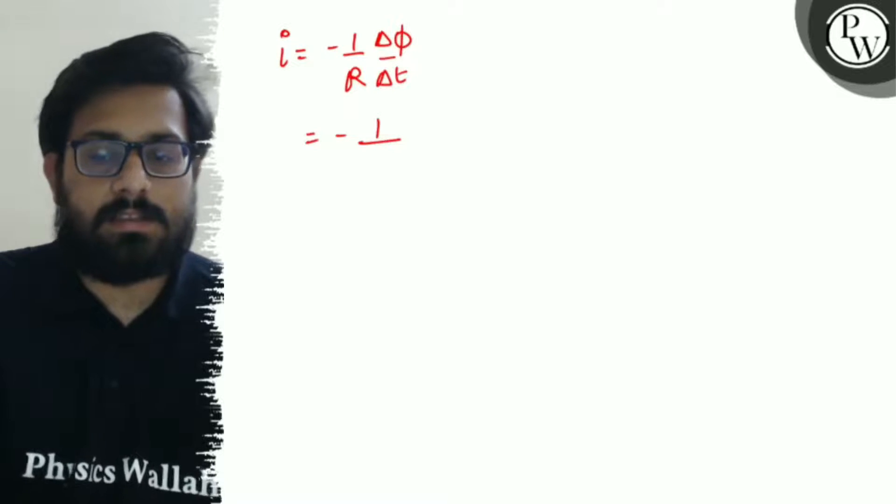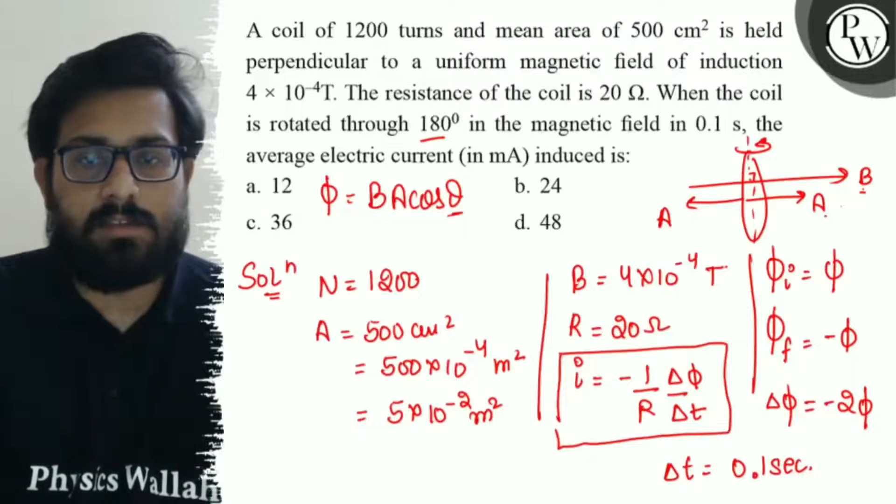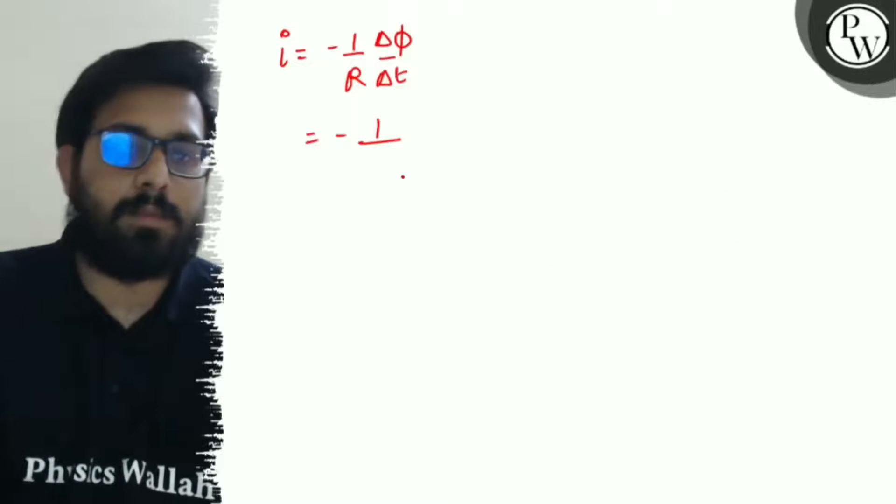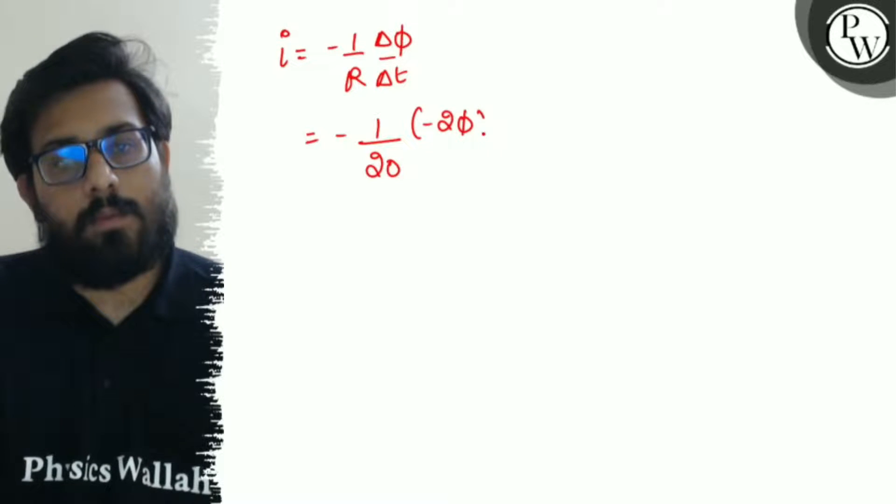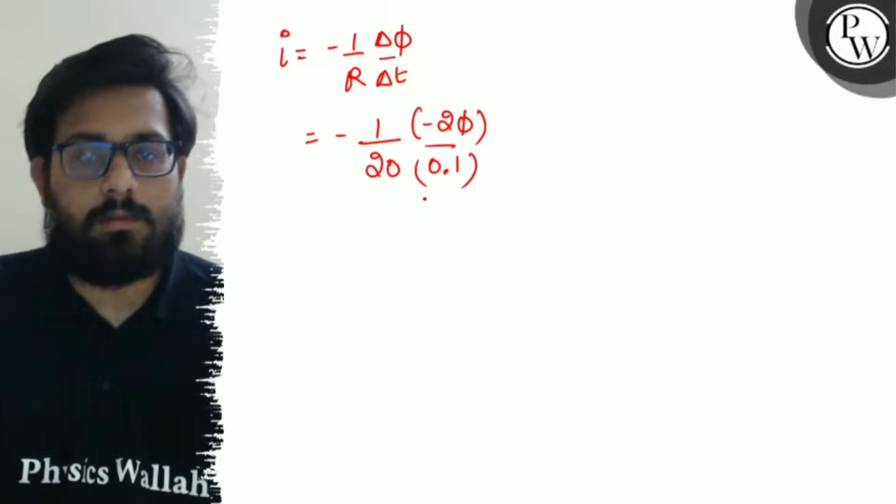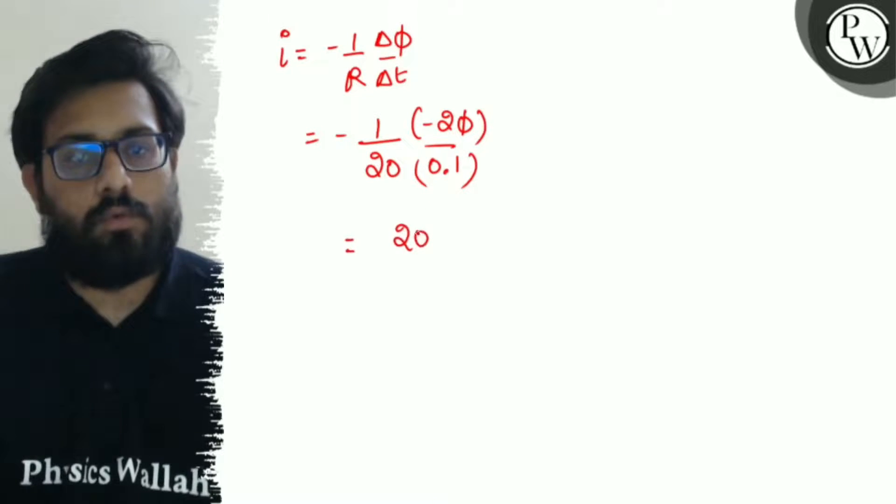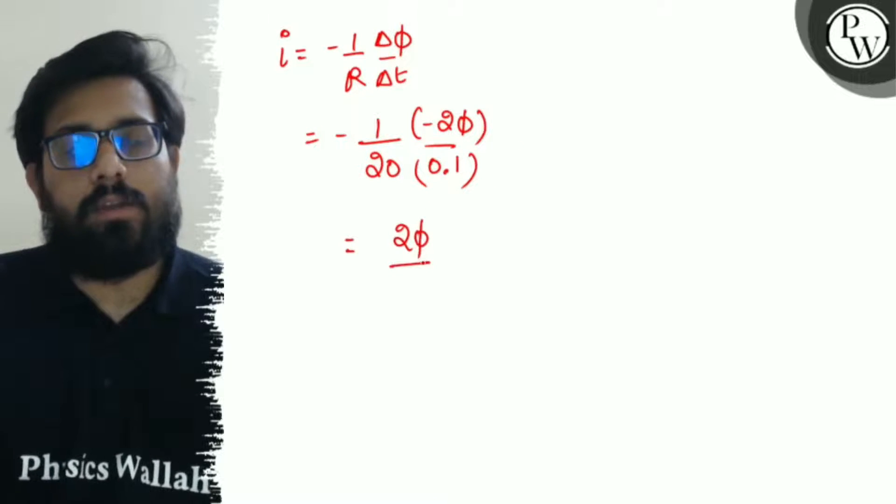Resistance is given in the question as 20, ΔΦ is -2Φ, so -(1/20)(-2Φ/0.1). Minus and minus cancel, we get 2Φ/(20×0.1).